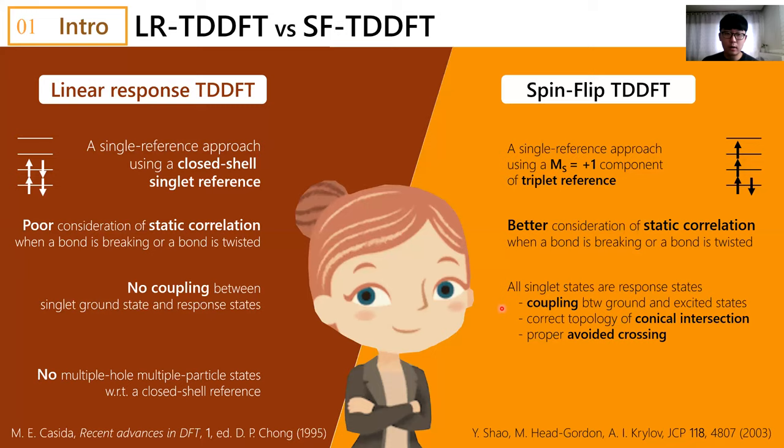Furthermore, multiple hole and multiple particle states are missing in the conventional linear response TDDFT, although there are improved methods to tackle this problem. In spin-flip TDDFT, some important two-hole, two-particle states with respect to the closed-shell configuration can be generated by single alpha to beta excitation from the triplet reference.